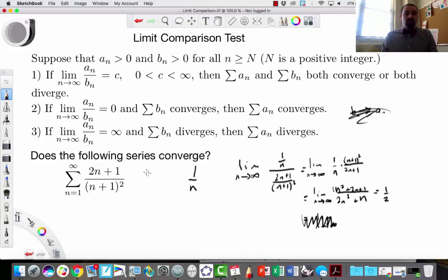So because this goes to a finite number that's non-zero, it means that the series 2n plus 1 over n plus 1 squared and the series 1 over n either both diverge or both converge. Since we know this is the harmonic series, and the harmonic series diverges, it means that the other series diverges as well. So that's the idea.